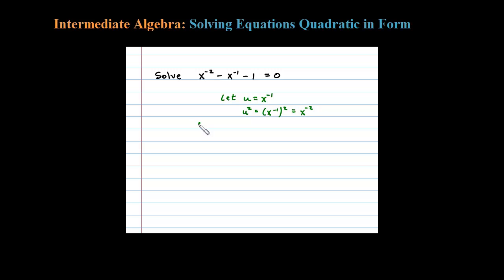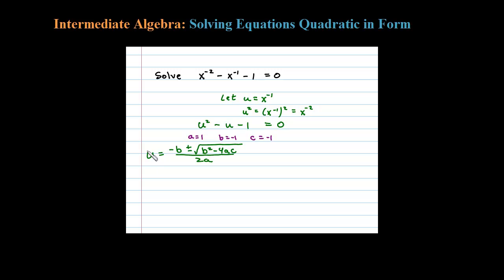Making that substitution, we're left with u squared minus u minus 1 equals 0. You can see this is a regular quadratic. This one's not going to factor, so let's use the quadratic formula. A is 1, B is negative 1, and C is negative 1. Using the quadratic formula — notice the variable is u — so u equals negative B plus or minus the square root of B squared minus 4AC all over 2A.